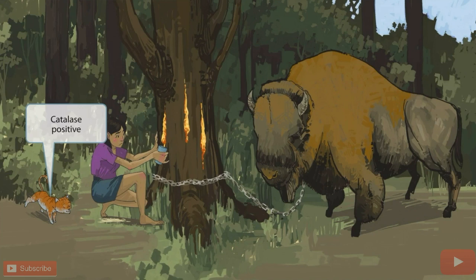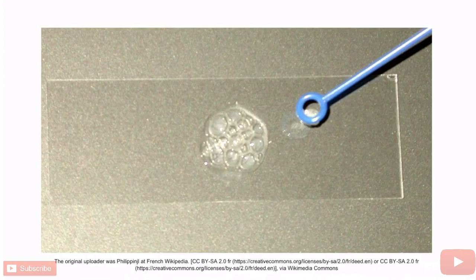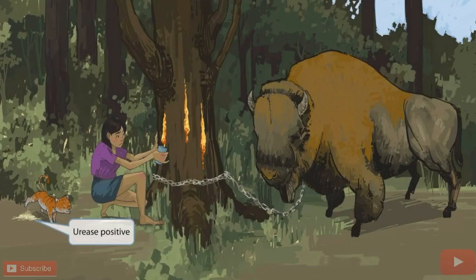So Staph saprophyticus is a catalase positive organism. This is a picture demonstrating the catalase test, which we covered in more detail in section 7, our video on Listeria. Recall that the bubbles indicate that the organism is catalase positive. Just like the girl, the cat is urinating because he's marking his territory.